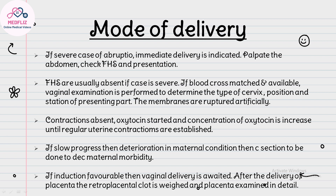In severe cases of abruption, immediate delivery is indicated. Palpate the abdomen, check fetal heart sounds and presentation. If fetal heart sounds are absent and blood is cross-matched and available, perform vaginal examination to determine cervical type, position, and station of the presenting part, and decide according to Bishop score. Artificially rupture membranes; if contractions are absent, start oxytocin and increase concentration until regular contractions are established. If there is slow progress or deterioration in maternal condition, perform cesarean section. If induction is favorable, proceed to vaginal delivery; after delivery, weigh the retroplacental clot and examine the placenta in detail.